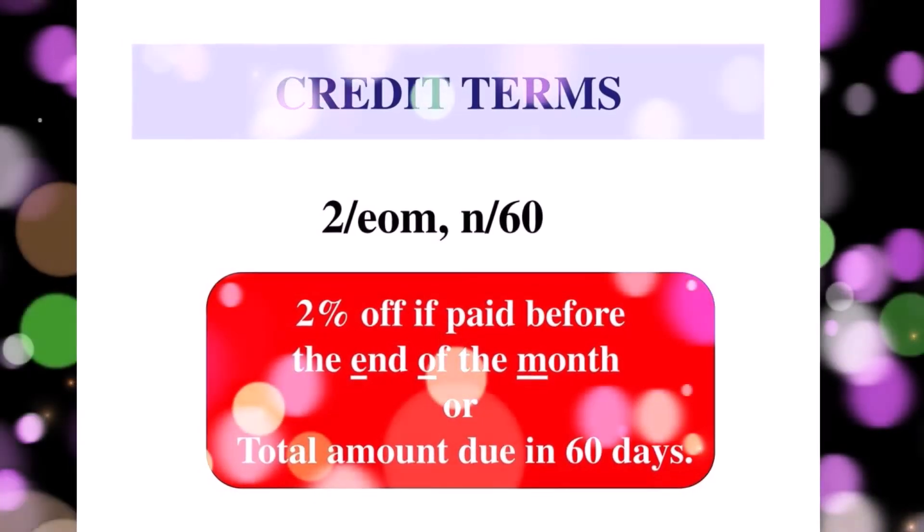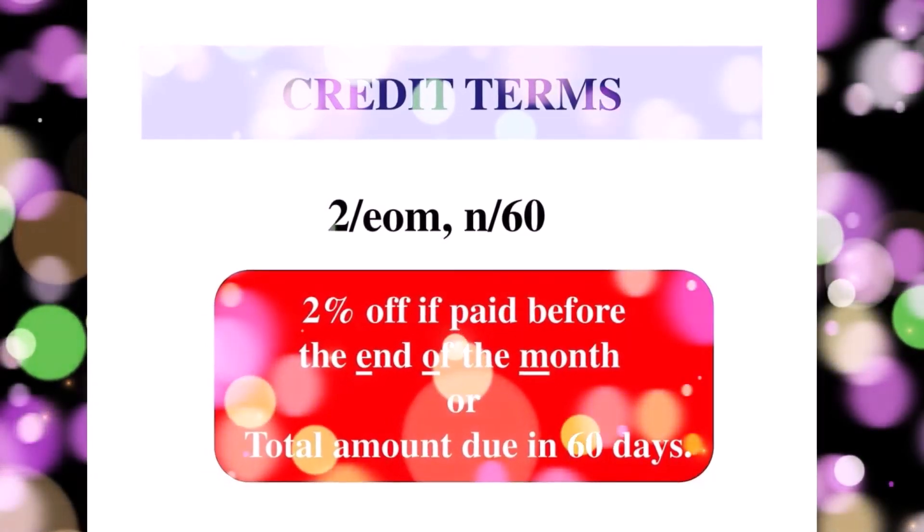Credit terms examples: 2/EOM and N/60 — 2% discount if paid before the end of the month, or total amount due in 60 days. FOB Shipping Point: the buyer pays the shipping cost because the title transfers to the buyer at the point the shipment starts its journey from seller to buyer.